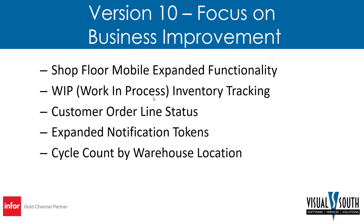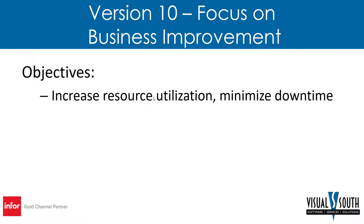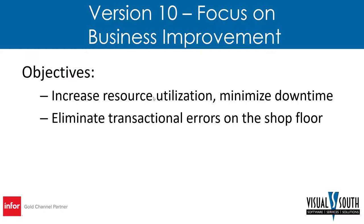A big addition in version 10 is cycle count by warehouse location — that's really nice added functionality. We no longer have to worry about just counting by ABC codes or product codes; now we can choose a warehouse location and count that location. Version 10 now runs on Microsoft Server 2019, SQL Server 2019, and Oracle 19c. If you're buying new hardware coming from an older version, odds are you'll want to look at version 10 to get the latest versions of Microsoft Server and SQL Server.